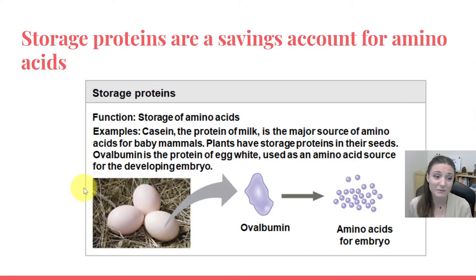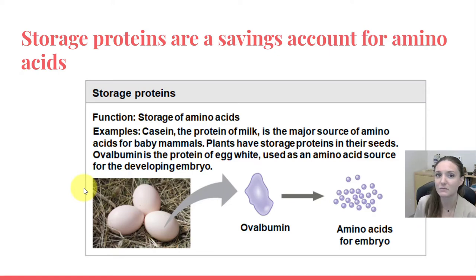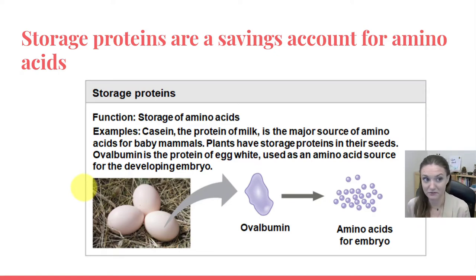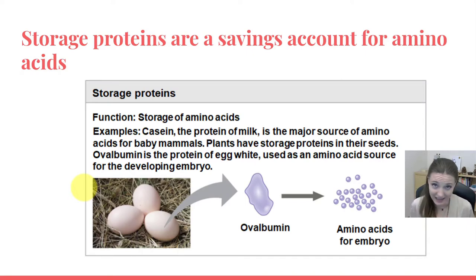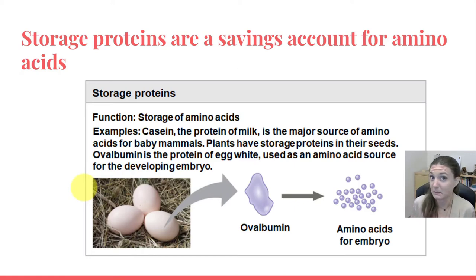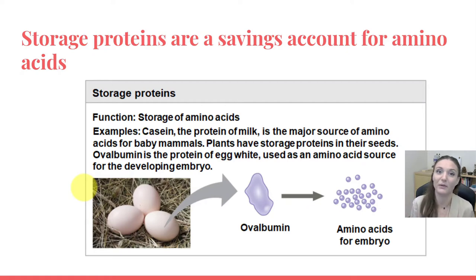Storage proteins are a way to transfer amino acids from one place to another, typically from one organism to another — so from parent to offspring. Storage proteins, things like casein and albumin in eggs, are a source of amino acids for the offspring. Casein is a protein in milk, and the intention is to transfer that protein from the mother cow to the offspring. Plants also have storage proteins.